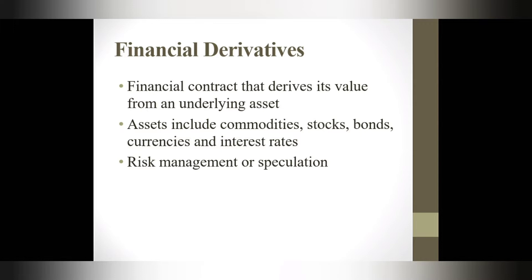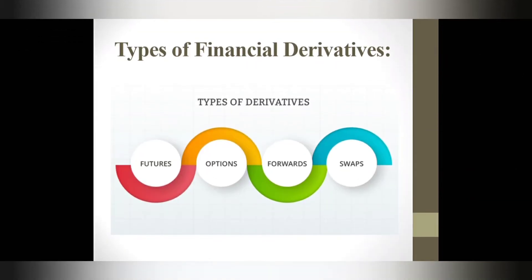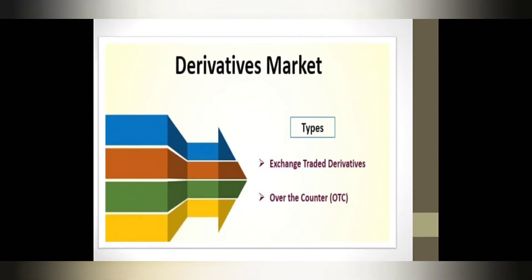The purpose of derivatives is risk minimization, which is specifically termed as hedging. There are four basic and important types of derivatives used in finance: futures, forwards, options, and swaps. These are termed as derivative instruments. Financial derivatives are traded over stock exchanges — known as exchange traded derivatives — and also directly on the over-the-counter market.